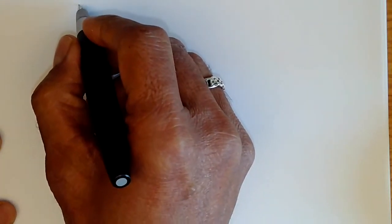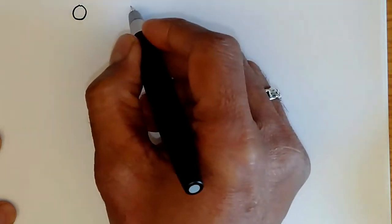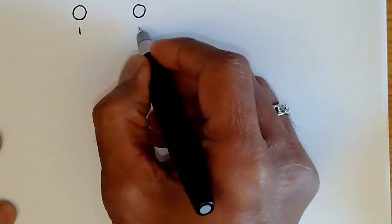And so we can write the space, the states down like this. This is a two state Markov chain with states one and two.